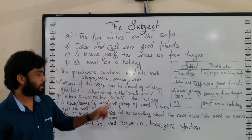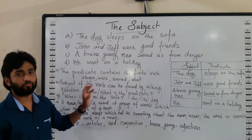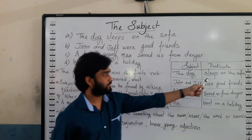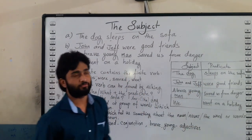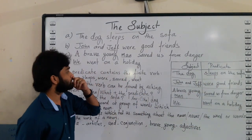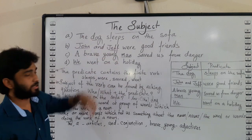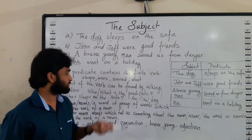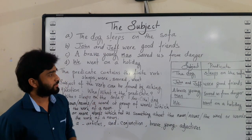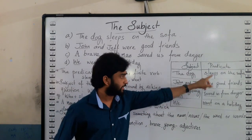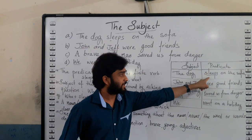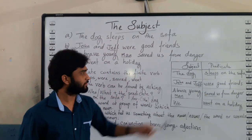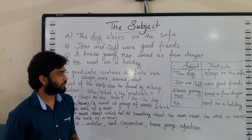...plus we add the predicate. So 'who or what' plus the predicate gives us the subject. For the first sentence, the subject is 'the dog' and the predicate is 'sleeps on the sofa.' So we ask: 'Who sleeps on the sofa?' — and the answer is 'the dog.'